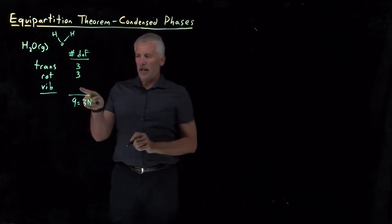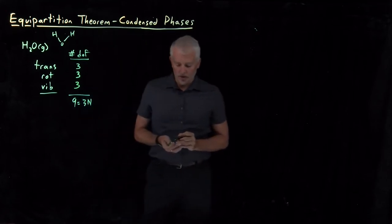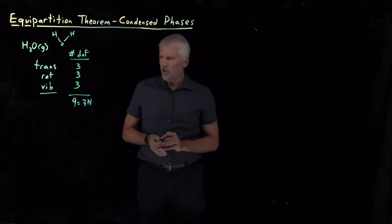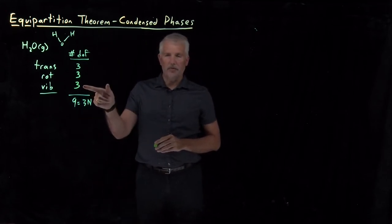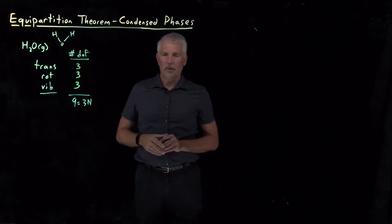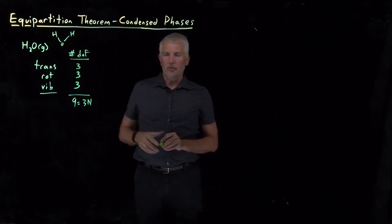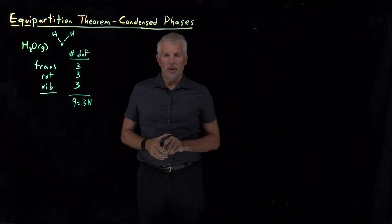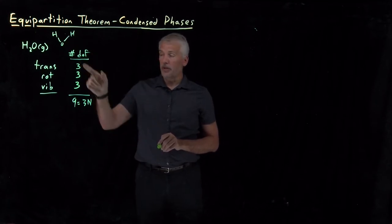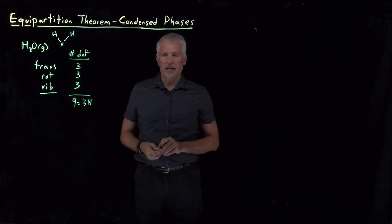That leaves three vibrational degrees of freedom, since everything must add up to nine. We don't have to identify what the vibrations are — they might be OH stretches or other modes. We know there must be three of them because that's what's needed to reach the total of nine degrees of freedom.